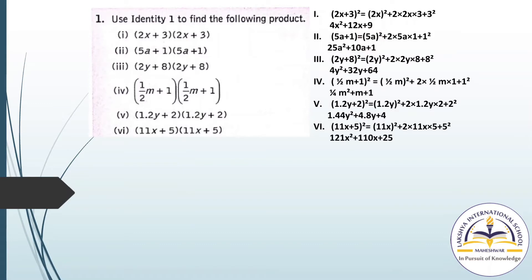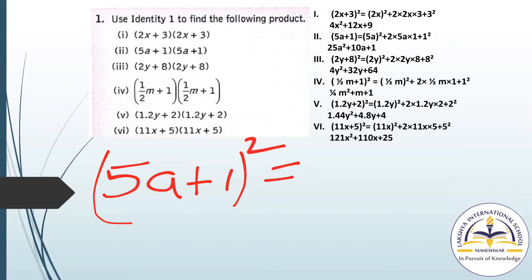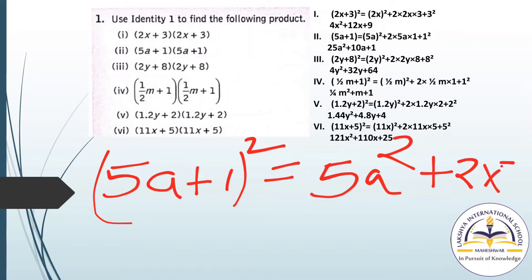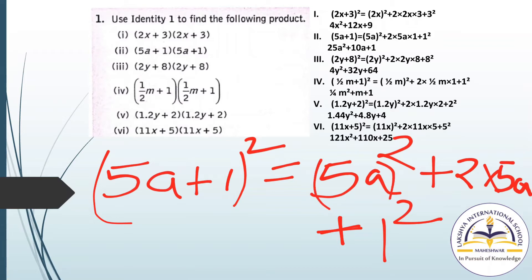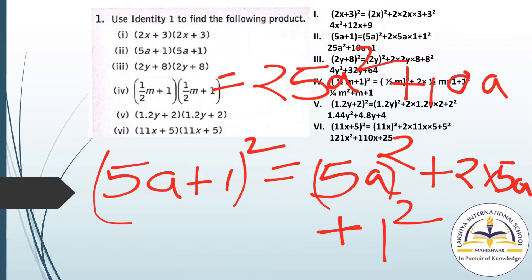For the second question: (5A + 1) and (5A + 1), which means (5A + 1) whole square. Applying Identity 1 with A as 5A and B as 1: (5A)² plus 2 into 5A into 1 plus 1 square. Solving: (5A)² gives 25A square, 2 into 5A gives 10A, and 1 square is 1. Answer: 25A square plus 10A plus 1.